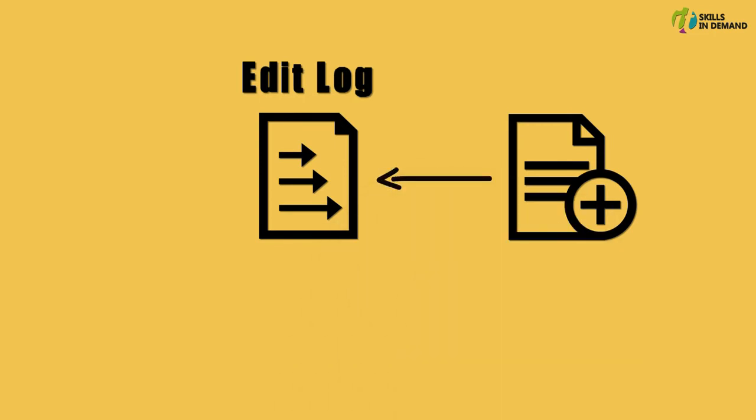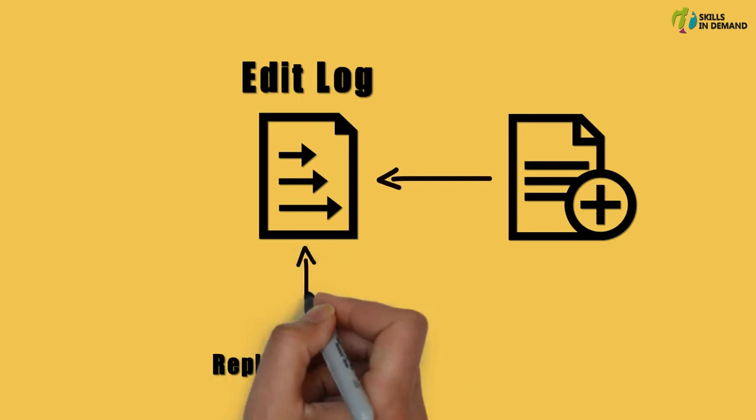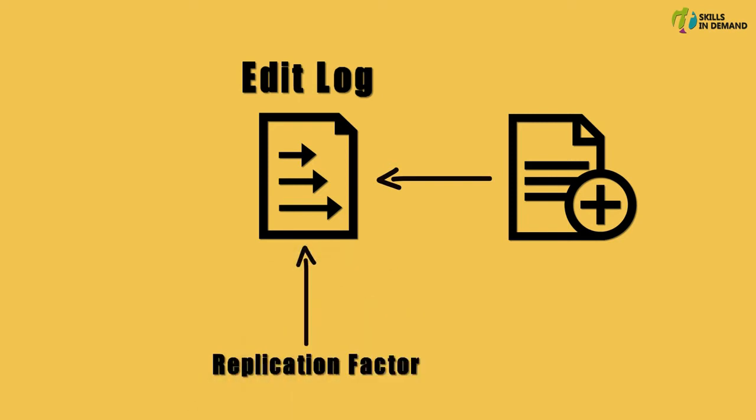Another example: suppose if the replication factor is changed, then an entry is made in the edit log file. Now let us try to understand how the file system metadata is managed in detail.